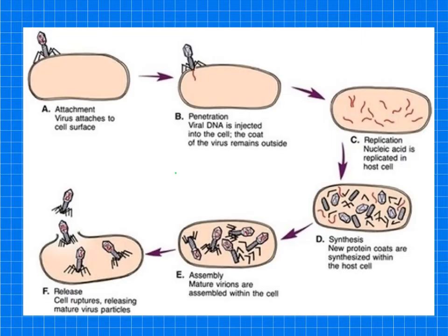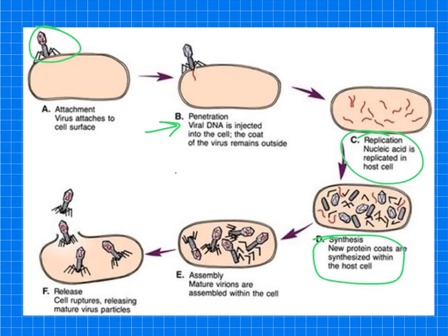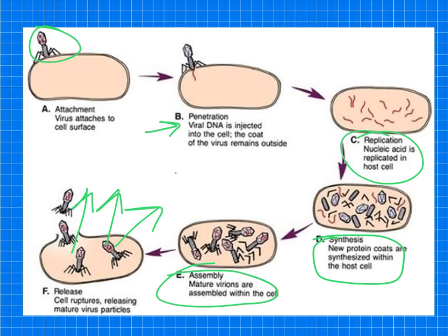Here is a quick summary of how viruses attach to and take over host cells and replicate. Viruses have attachment proteins which allow them to identify and attach to the cell. The virus then penetrates it, injecting its viral DNA or RNA, while the viral coat remains outside. There is then replication of the nucleic acids inside the host cell, followed by synthesis of new protein coats within the host cell — the virus takes over and uses the cell's own machinery to do this. Mature viruses are then assembled, the cell ruptures, and many more viruses are released into the host.